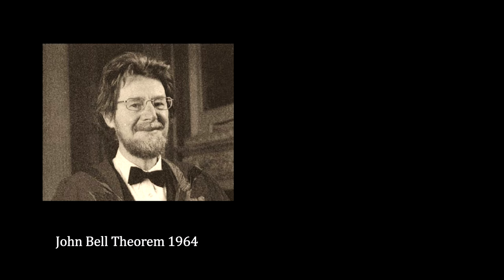In 1964, an Irish physicist, John Bell, published a mathematical paper proposing a way to test for hidden variables. His work is called Bell's Theorem, or Bell's Inequalities.